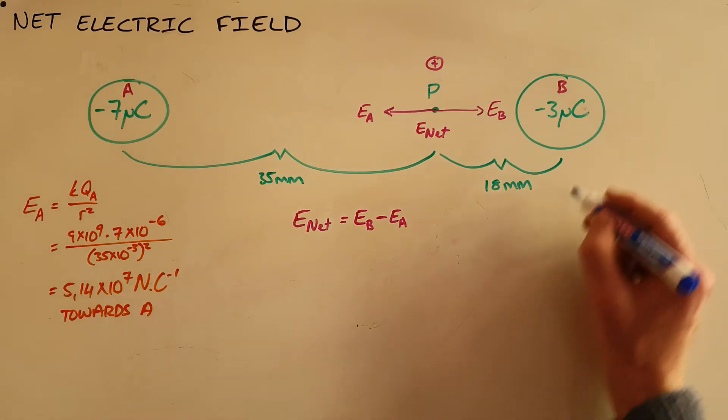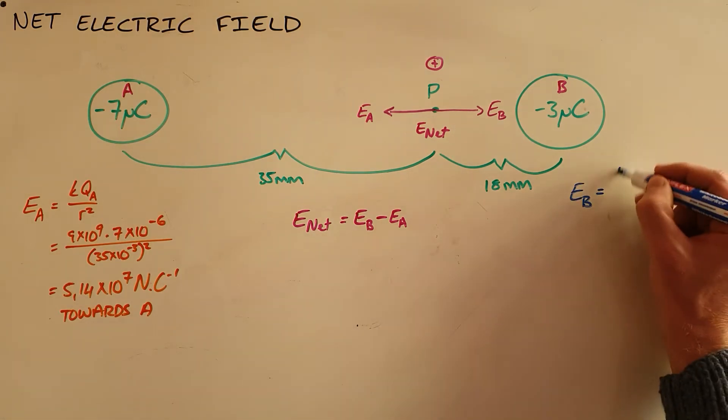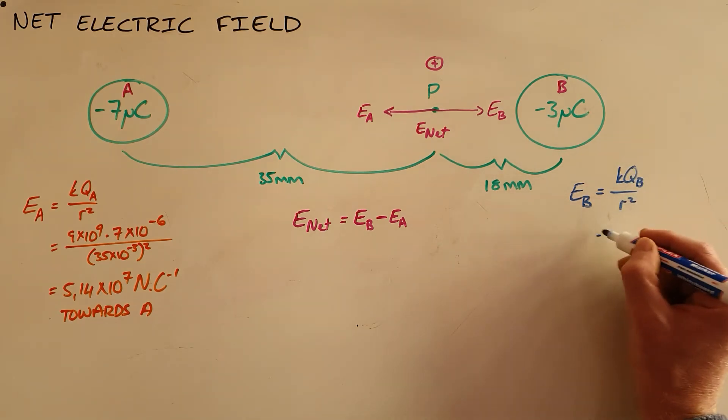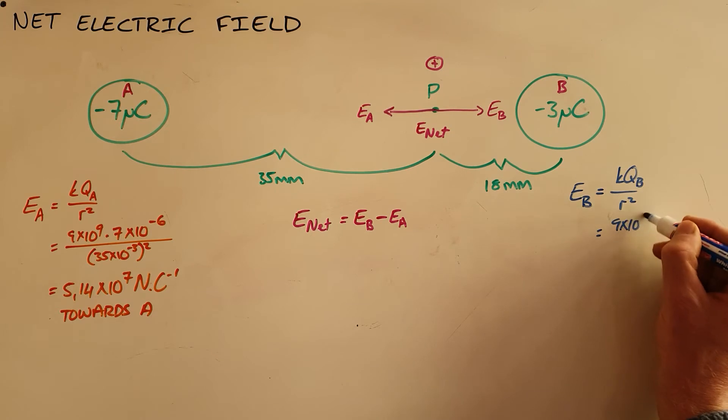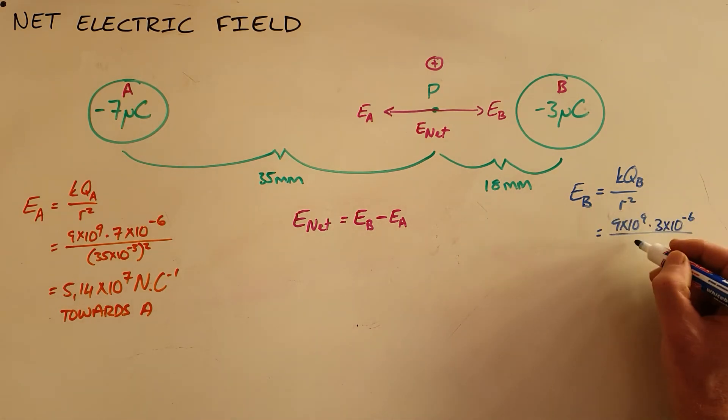We can then do the same for charge B and calculate the electric field as a result of B, which is now KQB over R squared. K once again our constant, the charge on B given as 3 microcoulombs, micro being 10^-6, and the distance here given as 18 millimeters, 18 times 10^-3 squared.